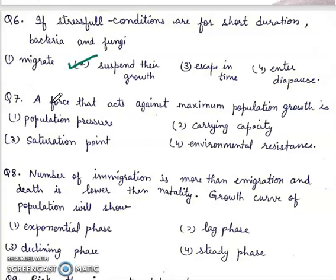Question 7: A force that acts against maximum population growth is first, population pressure; second, carrying capacity; third, saturation point; fourth, environmental resistance. Right answer will be fourth, environmental resistance.